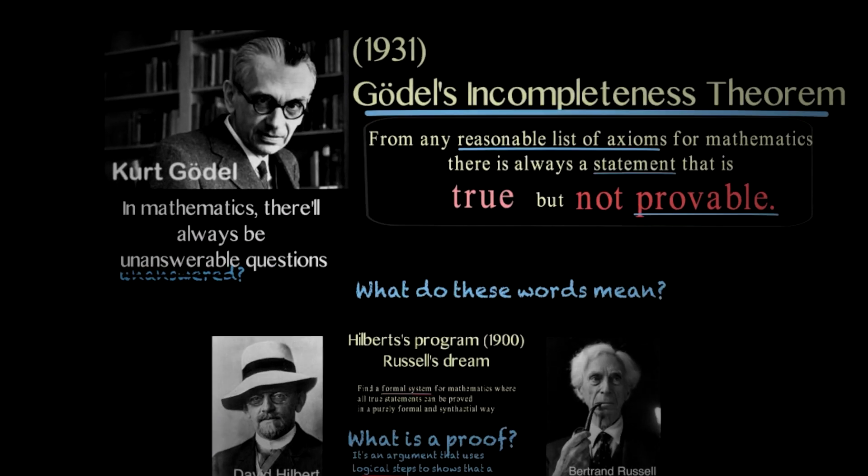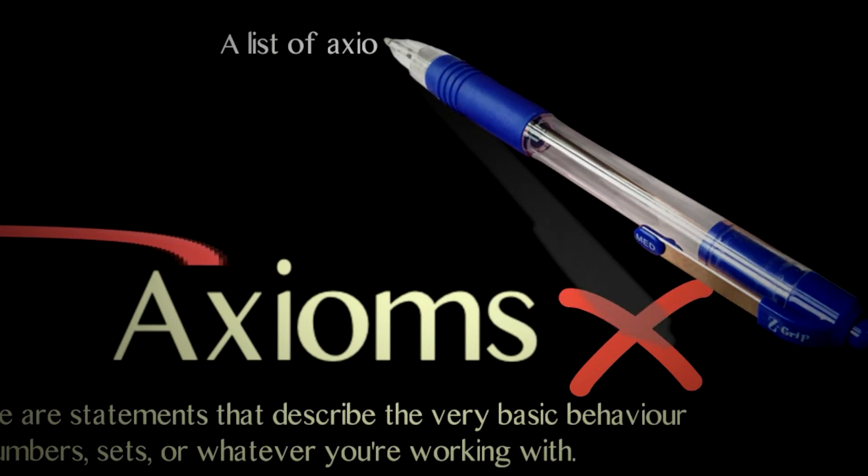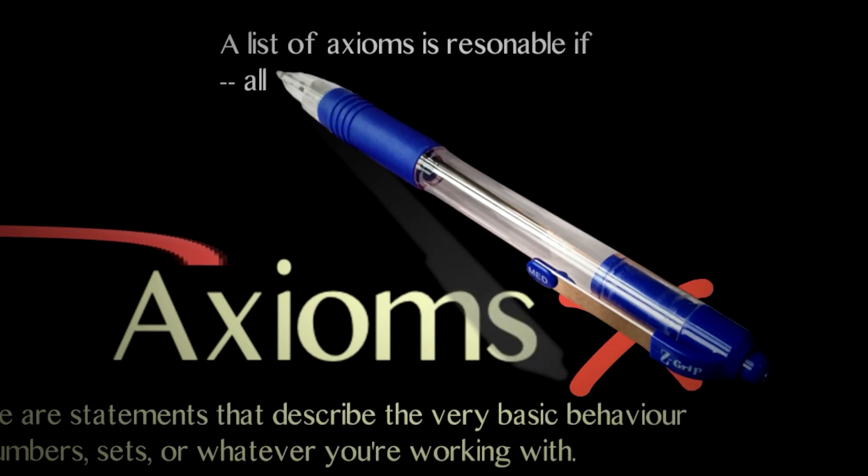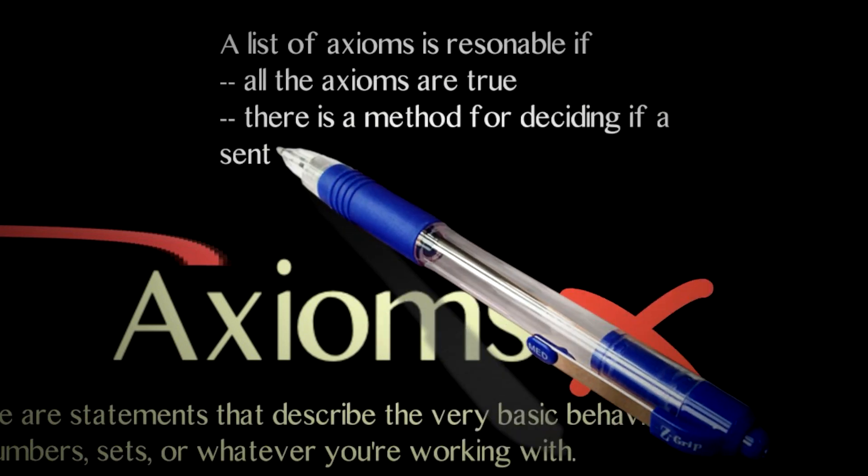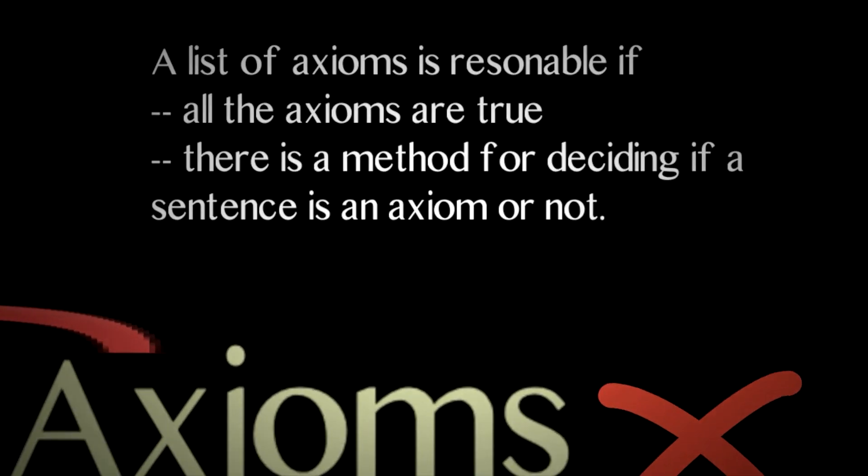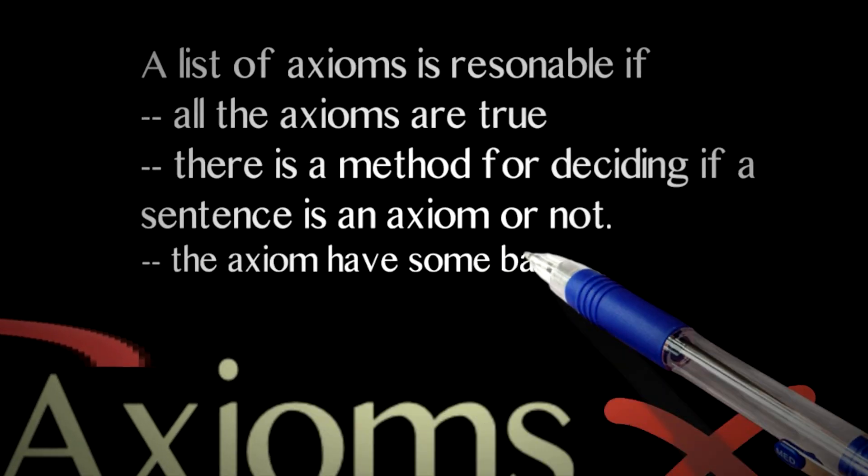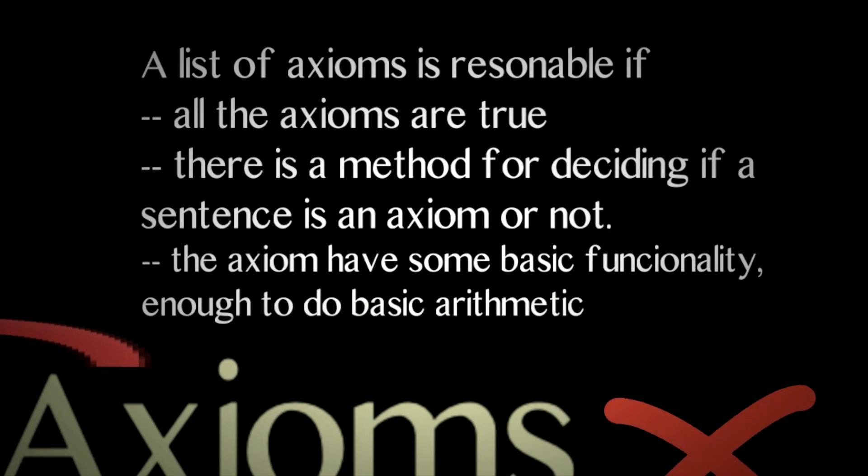There is one more thing we need to explain. What do we mean by a reasonable list of axioms? We mean a list that satisfies three things. That the axioms are true. That we can recognize them when we see them. Formally, this says that we can write a computer program that if we input a statement, it's going to tell us if it's an axiom or not. If the list of axioms is finite, this is trivial. If you have a list, you just check that it's in the list. But the condition is important when we have an infinite list of axioms, which, believe it or not, that's actually often the case. And three, we need the axioms to have a minimal functionality. They need to be sufficiently strong to do some basic arithmetic.